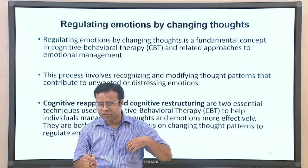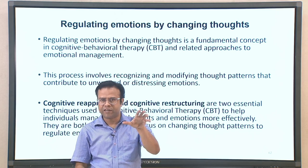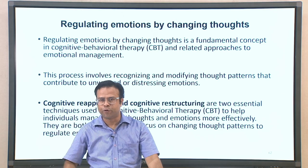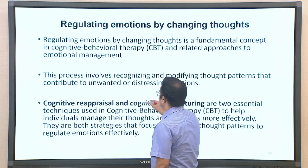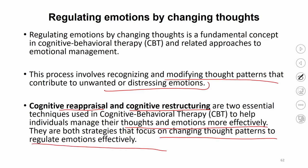Cognitive behavior therapy is one of the most used and most effective therapies for different disorders, and its fundamental principle is changing thoughts so that the balance of emotions changes. This process involves recognizing and modifying thought patterns that contribute to unwanted or distressing emotions. Two key techniques used in most CBT are cognitive reappraisal and cognitive restructuring, both of which focus on changing thought patterns to regulate emotions effectively.